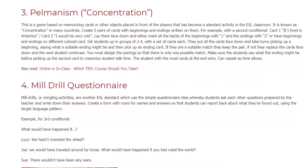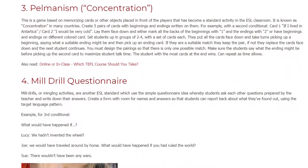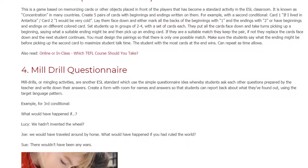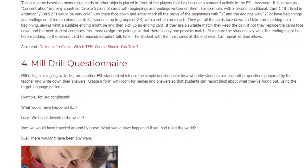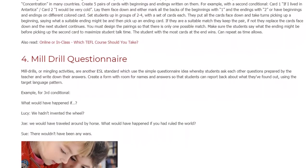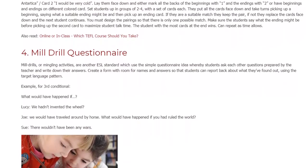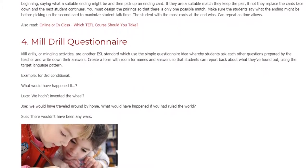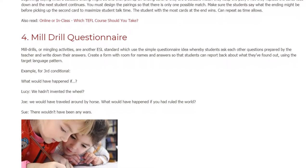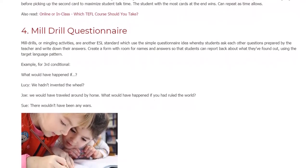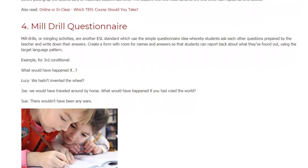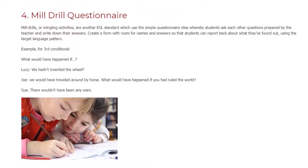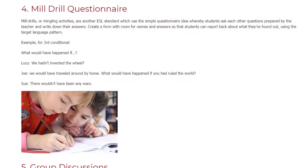Set students up in groups of 2-4 with a set of cards each. They put all the cards face down and take turns picking up a beginning, saying what a suitable ending might be, and then pick up an ending card. If they are a suitable match they keep the pair; if not, they replace the cards face down and the next student continues. You must design the pairings so that there is only one possible match. Make sure the students say what the ending might be before picking up the second card to maximize student talk time. The student with the most cards at the end wins.